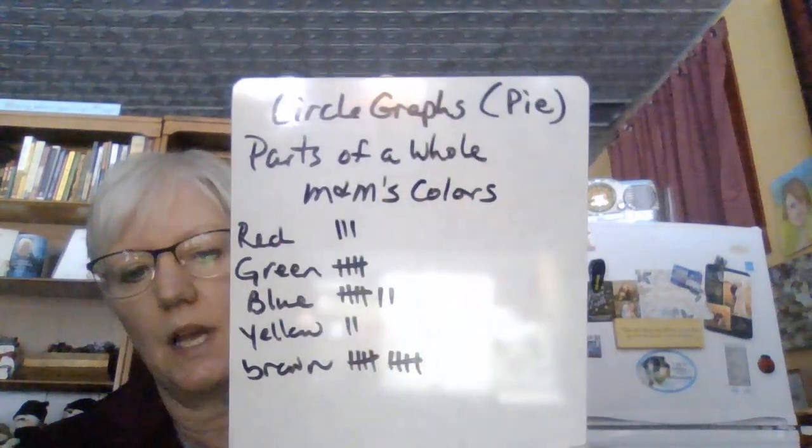First I have to count up all my tallies and see how many total I have — 27 total M&Ms. So red is 3 out of 27, green is 5 out of 27, blue is 7 out of 27, yellow is 2 out of 27, and brown is 10 out of 27.